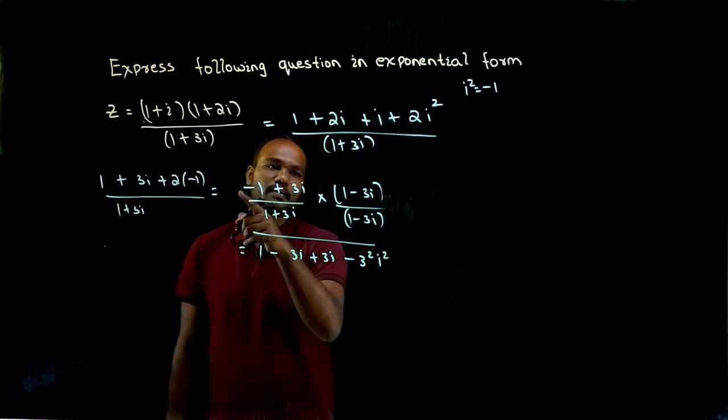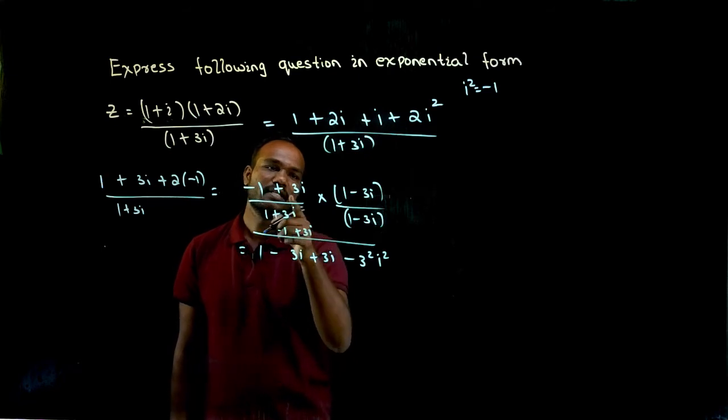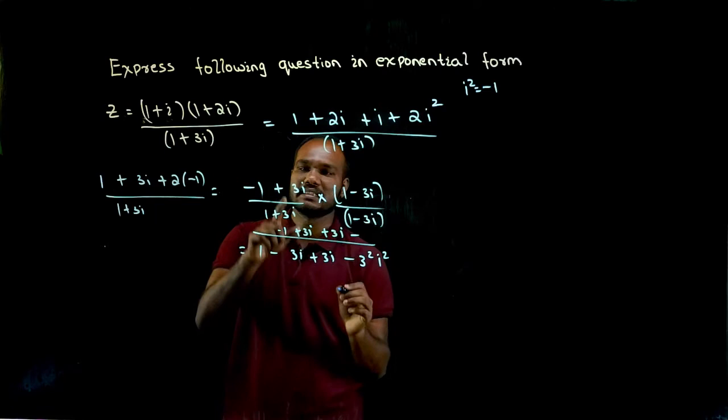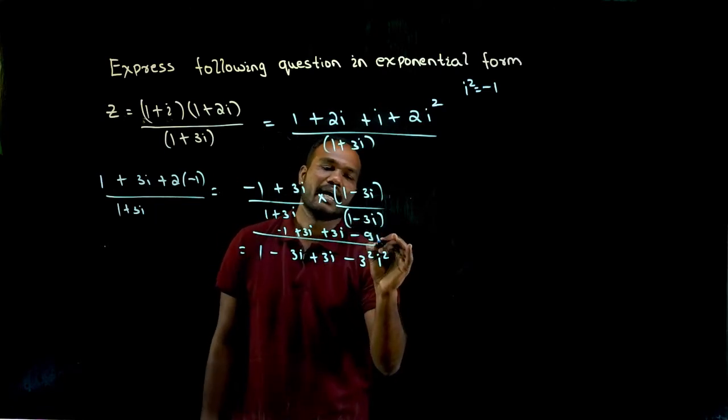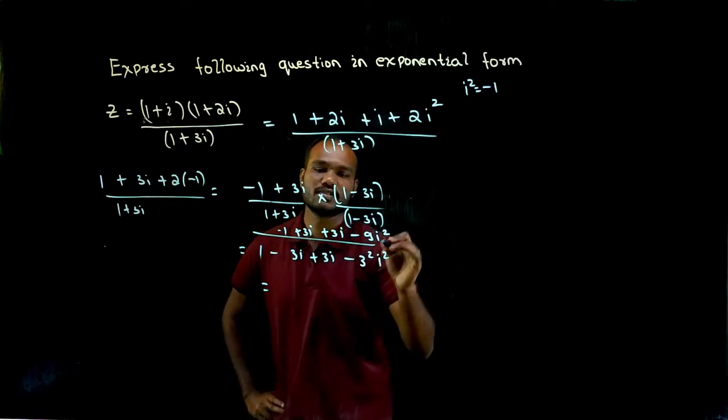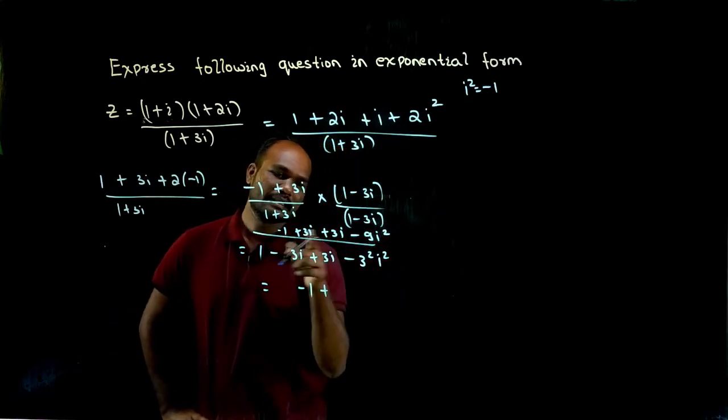In the numerator: minus 1 into 1 is minus 1, minus 1 into plus 3i is plus 3i, and 3i into 1 is plus 3i, and plus into minus is minus, 3 into 3 is 9, i into i is i square. So i square value is minus 1, so if I substitute I'll just rewrite this again: minus 1 plus 6i.